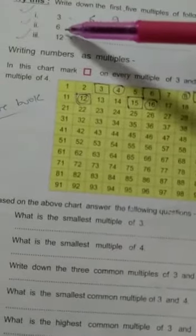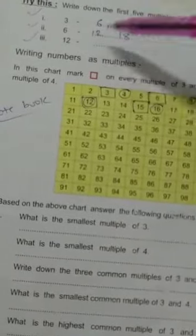Similarly, you have to do of 6 and 12. First 5 multiples. Now we will discuss writing numbers as multiples. In this chart, mark square on every multiple of 3 and mark circle on every multiple of 4.